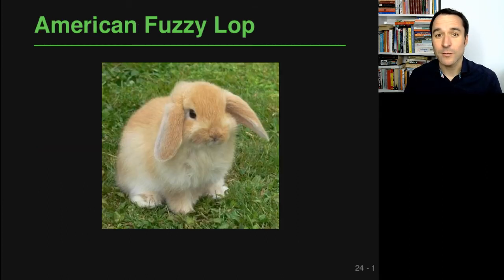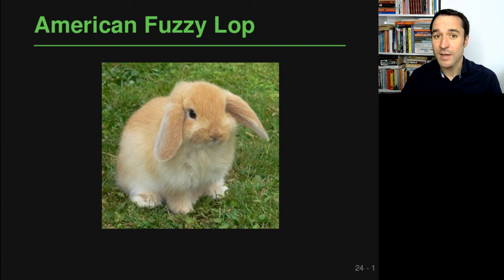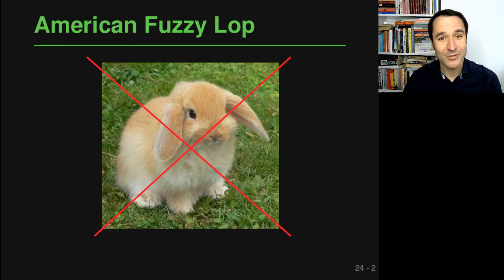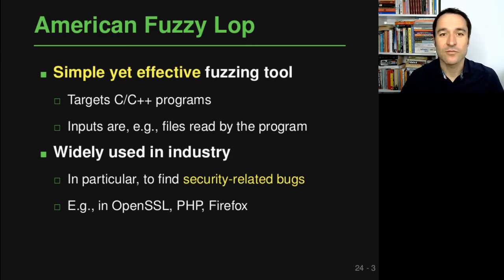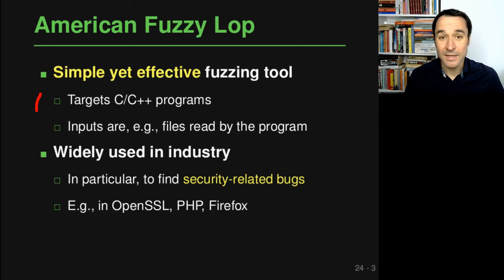This overall idea of gray box fuzzing can be implemented in many different ways. Here we focus on a tool called American Fuzzy Lop — also the name of a rabbit breed, but this lecture is about program analysis. American Fuzzy Lop, abbreviated AFL, is a simple yet effective fuzzing tool that targets C and C++ programs. The inputs are typically files read by the program or more broadly all inputs that the program takes, so it is used to fuzz entire programs.